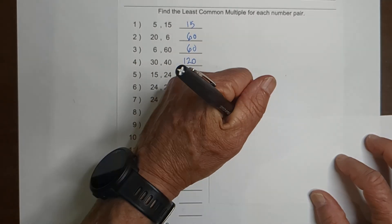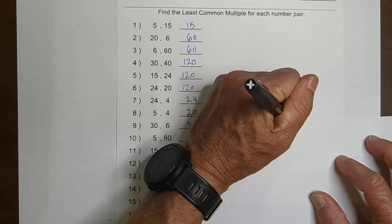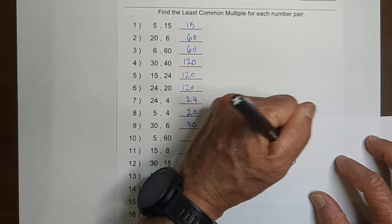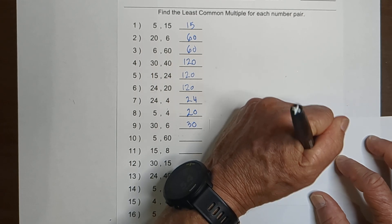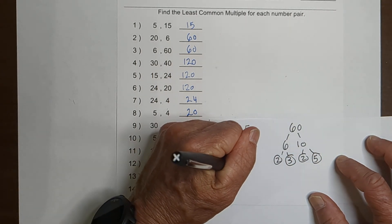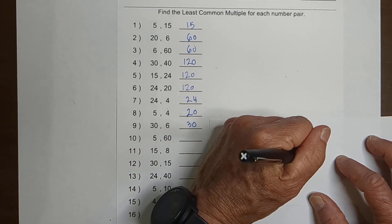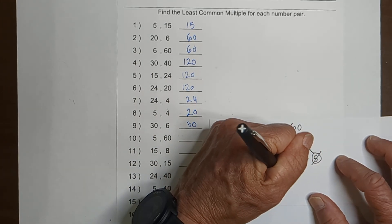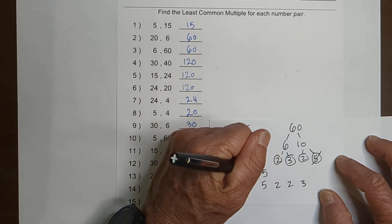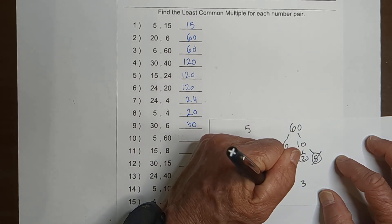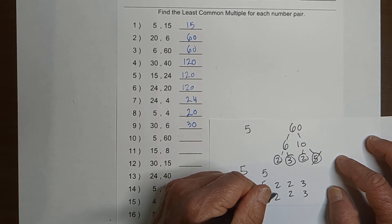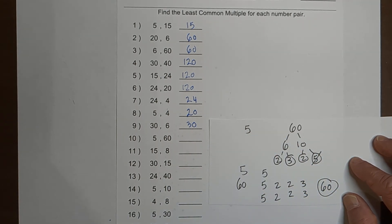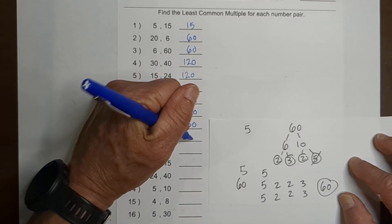On this one, just to mix it up, let's go with a factor tree. 5 is prime. And then 60: let's go 6 times 10. Then 2 times 3 — they're both prime. And then 2 times 5 — they're prime. So let's put a chart. We have a 5 for the 5, and then a 5, 2, 2, and 3 for 60. Bring down — there are 2 fives, so only bring down 1. We've got 5, 2, 2, and 3. That's 10, 20, and 20 times 3 is 60. So for 5 and 60, the answer is 60.